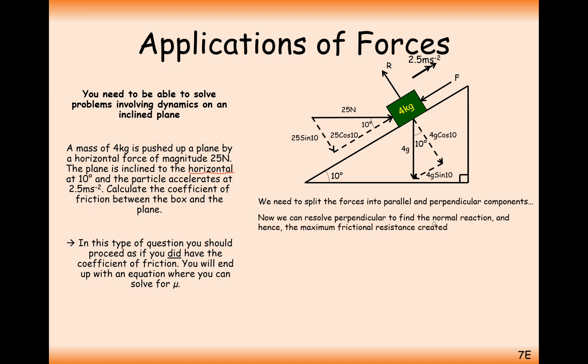So now we need to resolve perpendicular to the normal reaction and hence find the maximum frictional resistance created. Or in other words, we're going to use F equals mu R. The first thing we need to do, though, is work out what R is. So resolving perpendicular to the plane, highlighting the blue forces in the diagram here, we've got two forces into the plane and one force out the plane. It's not moving in this direction, so the forces must be equivalent to each other. So R equals 25 sin 10 plus 4g cos 10. And we can work out this value at 43 Newtons.